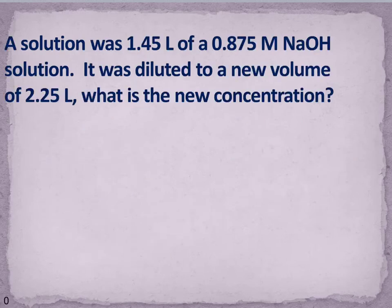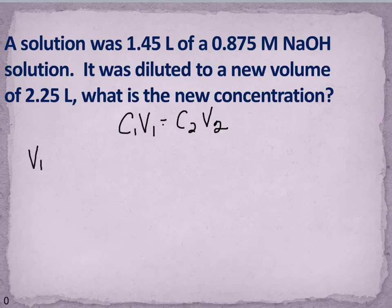So let's look at an example of how we would use this. So the first thing is we want to look at our equation. So we have C1V1 equals C2V2. And what I'm actually going to do is as I go through my problem, I'm going to make a list of what information I know. So a solution was 1.45 liters. So I'm going to call this V1 because I came to it first, really no other reason, of a 0.875 molar NaOH.